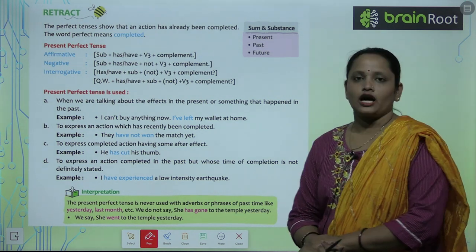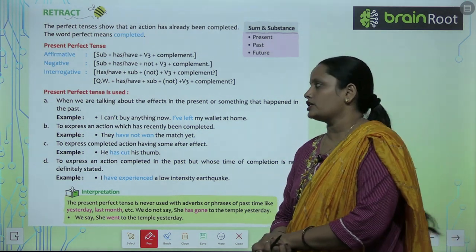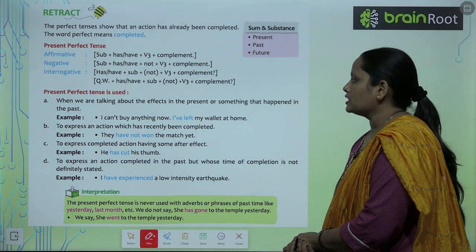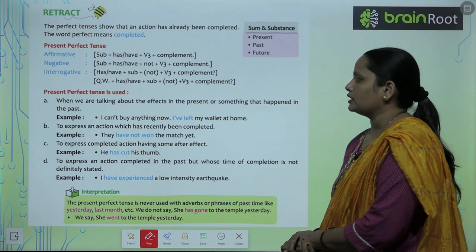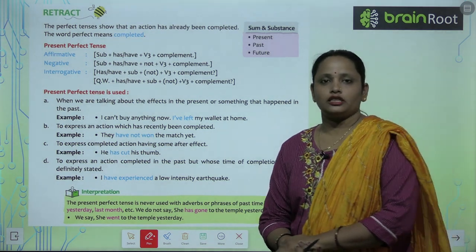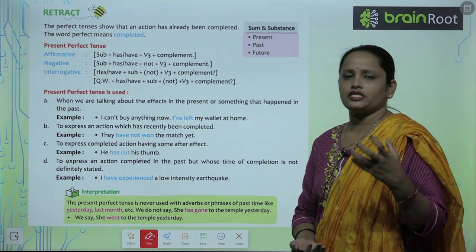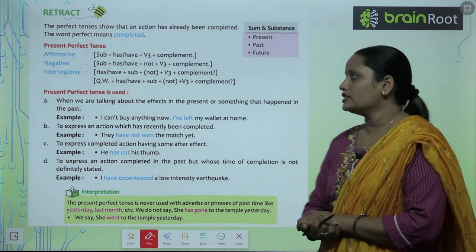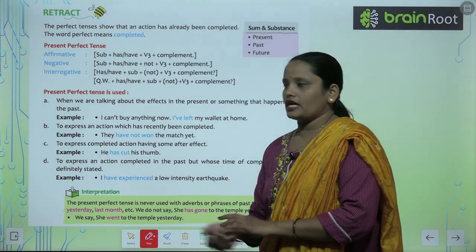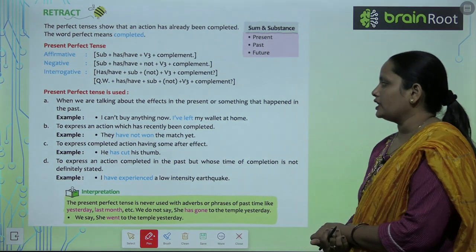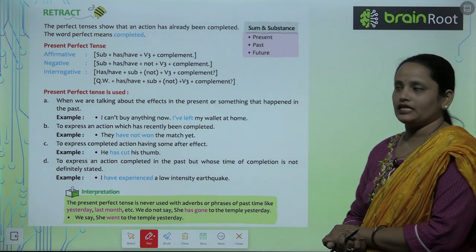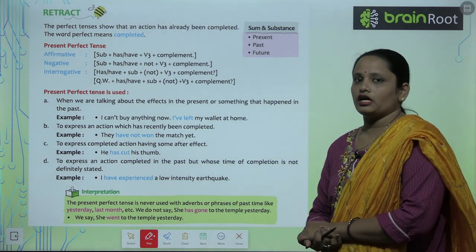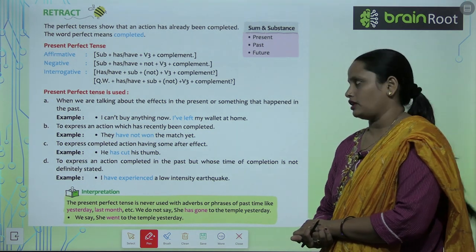Present perfect tense is used when we are talking about the effects in the present and something that happened in the past. Ye tab use kiya jata hai jab kisi chiz ka effect present mein hai but wo chiz past mein start hui thi. For example: I can't buy anything now — I have left my wallet at home. Main ghar se wallet bhul aaya, isliye abhi main kuch bhi nahi kharid sakta.